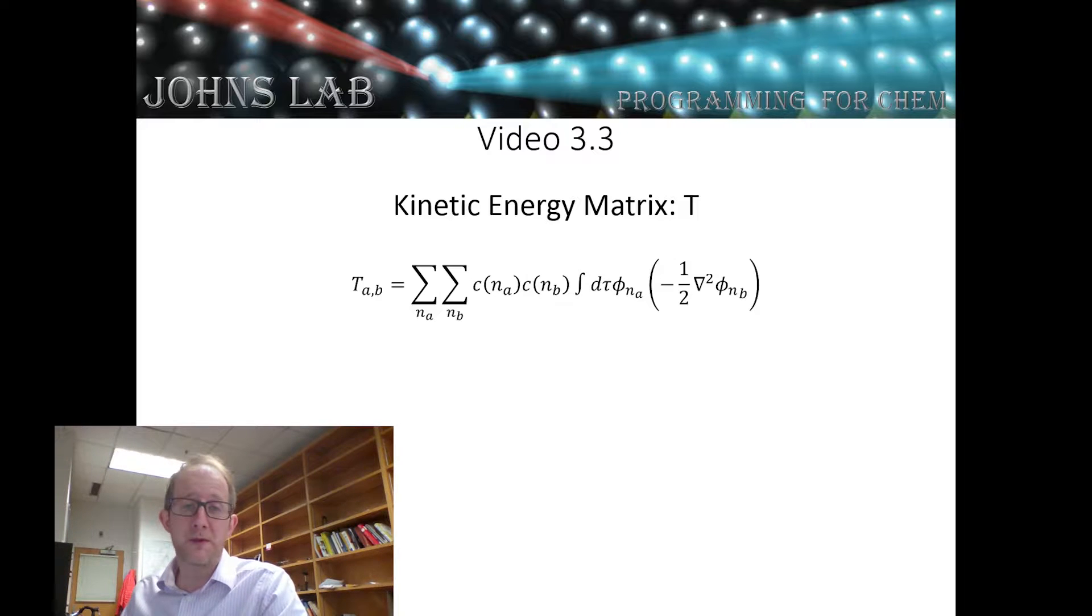This operator is just d squared by dx squared plus d squared by dy squared plus d squared by dz squared, multiplied by minus one half. If you take the derivative of a Gaussian function, you get the same Gaussian function times a polynomial that is centered at the same location as the Gaussian.